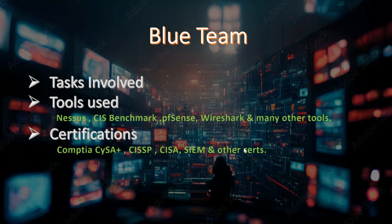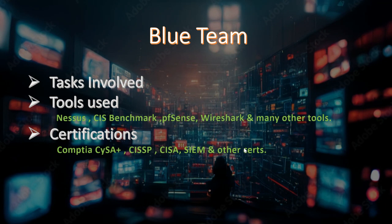Looking at the tools commonly used by the blue team, we have Nessus — which is not just a blue team tool but is used by red teams as well — it finds vulnerabilities and is used for performing auditing on systems to identify loopholes that can be mitigated to tighten security. We also have CIS Benchmark, which performs Level 1 and Level 2 benchmarking of systems to find weaknesses that can be tightened to meet security standards, and we have pfSense, Wireshark, and many other tools.